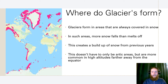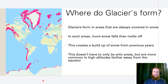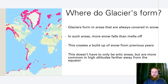So where do glaciers form? Glaciers form in areas that are always covered in snow. Usually we think this is the Arctic, but this is not necessarily the case. This is anywhere that more snow falls than melts off, which creates a buildup from previous years. On this map, you expect glaciers down in Antarctica, up in the Arctic Circle, Greenland, Canada, and Alaska. But somewhere you don't expect glaciers would be Chile, Africa, parts of Europe, parts of Asia — these areas have high enough mountains, like the Alps, the Himalayas, and the Andes, where the snow is allowed to accumulate and it doesn't melt off.